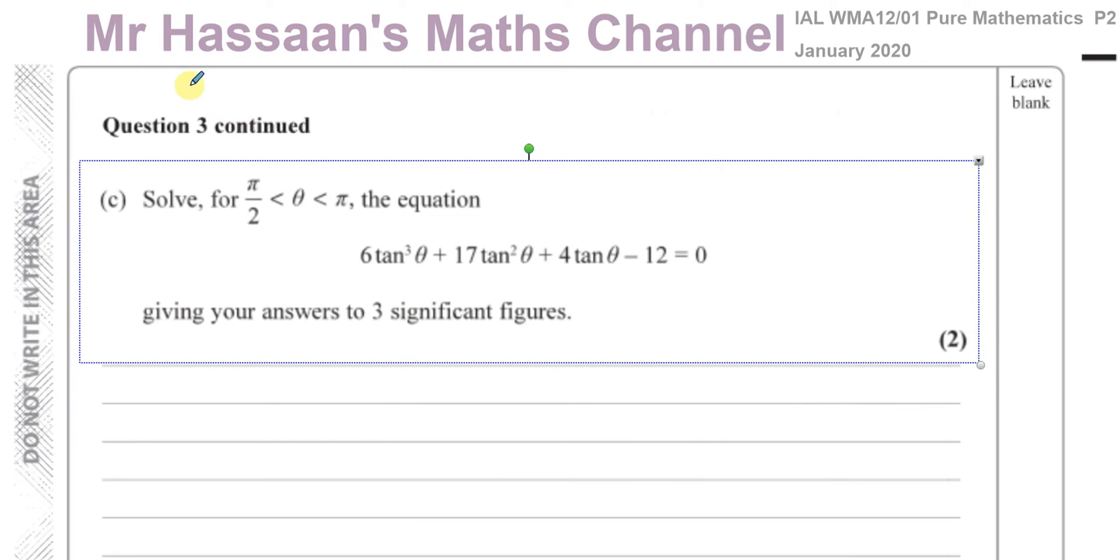Alright, it says solve. Now it looks like it's a completely unrelated question. Suddenly we got to trigonometry. Solve for theta between pi over 2 and pi, the equation 6 tan cubed theta plus 17 tan squared theta plus 4 tan theta minus 12 equals 0.